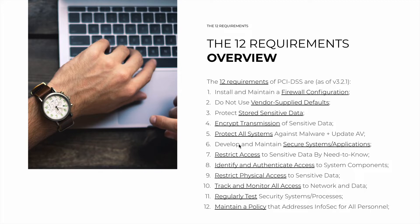Requirement 4 is about encrypting transmission of sensitive data, especially across public networks. Requirement 5 is about protecting all systems against malware, as well as keeping the antivirus updated. Requirement 6: develop and maintain secure systems and applications, including security requirements in your development lifecycle, as well as applying patches in a timely manner. Requirement 7 is about restricting access to sensitive data by need to know — minimize who has access to the data and what access every person has.